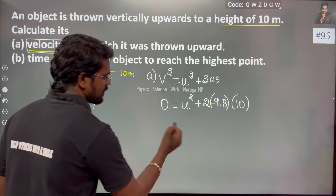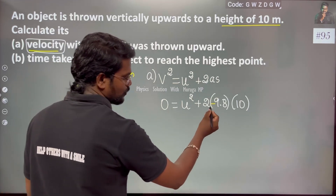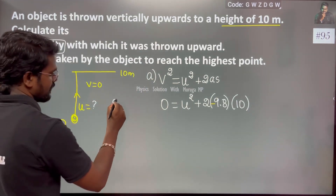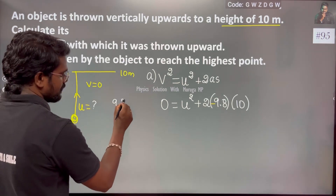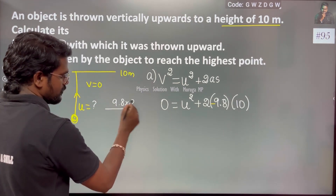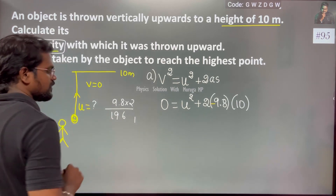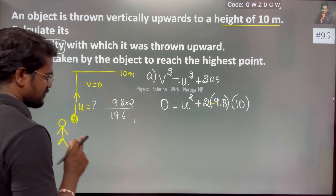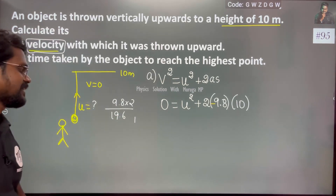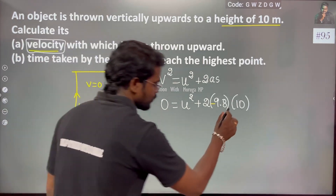So this gives 0 = u² + 2 × 9.8 × 10. Now 9.8 × 2 = 19.6, and into 10 gives 196. So u² = 196, meaning u = 14 m/s. We can take g as 10, giving u = √200 ≈ 14 m/s.